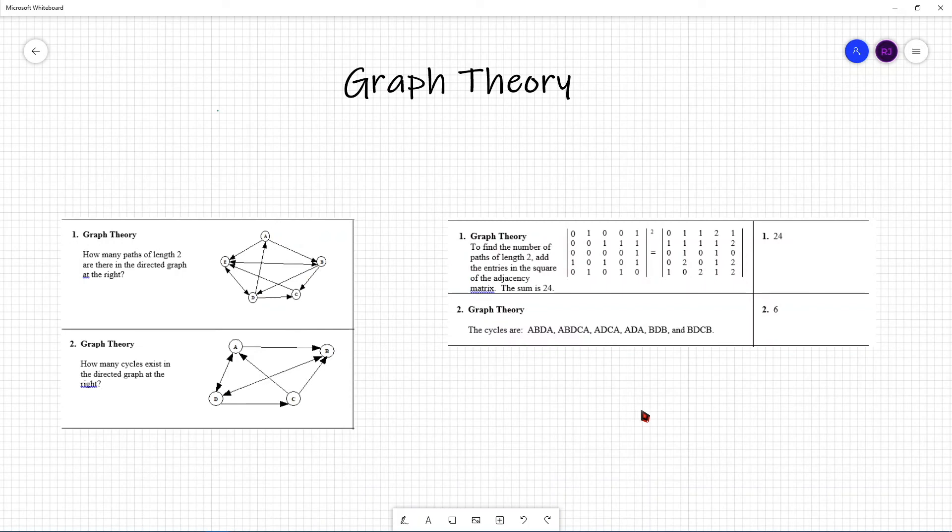For the last two problems, for the interest of time, I will display the questions and the answer together. The first question is, how many paths of length 2 are there in the directed graph at the right? So, this is the graph. And to solve this problem, the first thing that was done was to create the adjacency matrix. So, they put zeros and ones. Pretend this is A, B, C, D, E and A, B, C, D, E.